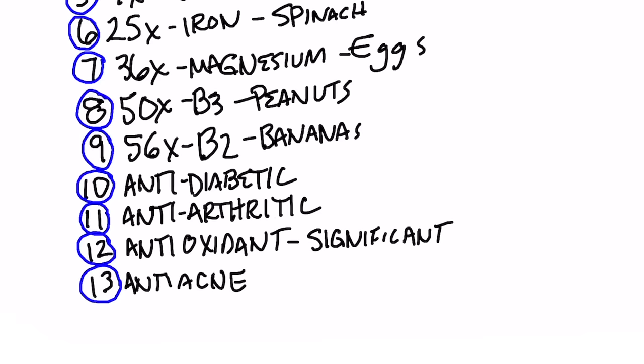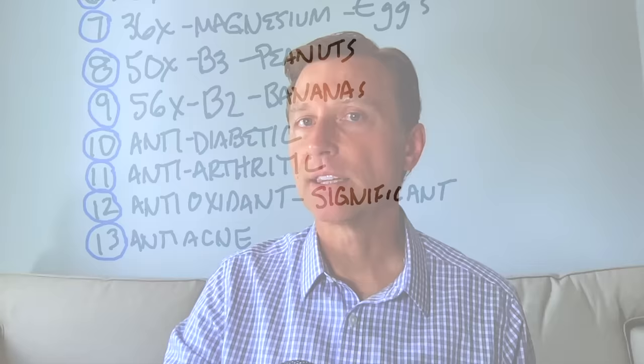Number 12, it's a very powerful antioxidant. And number 13, it's anti-acne. So Moringa is definitely on the list of superfoods, not only the massive amount of nutrients, but also phytonutrients.